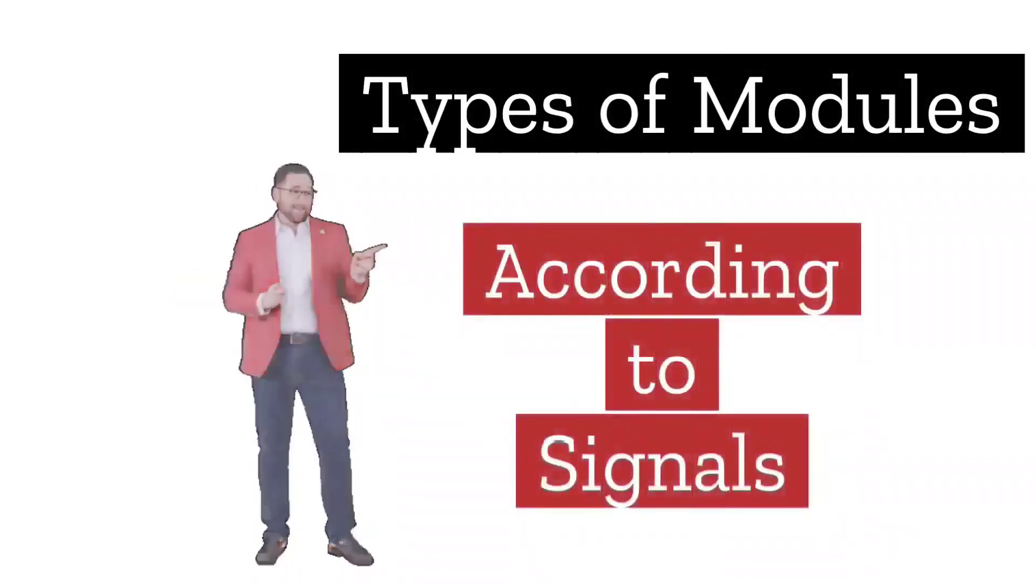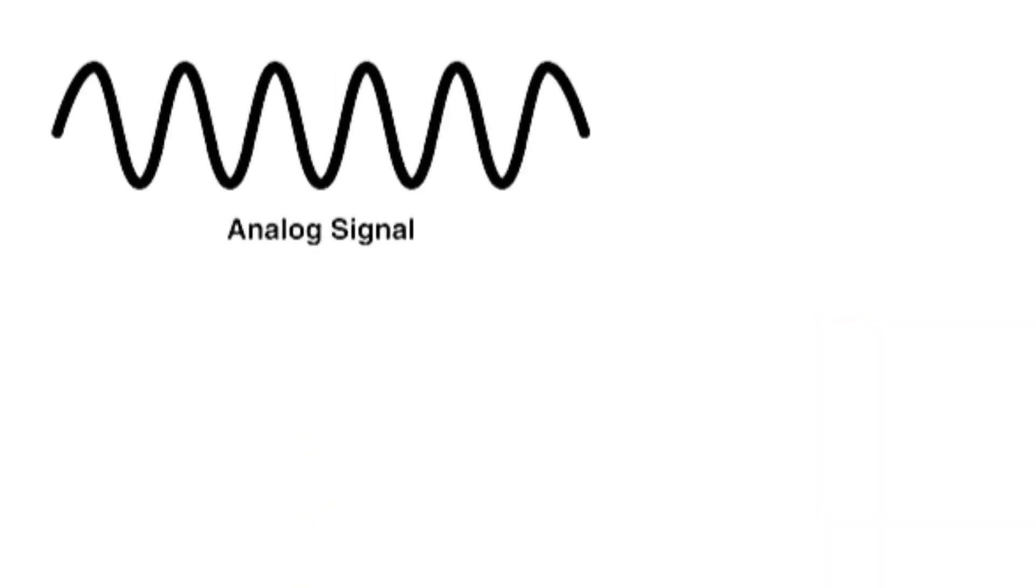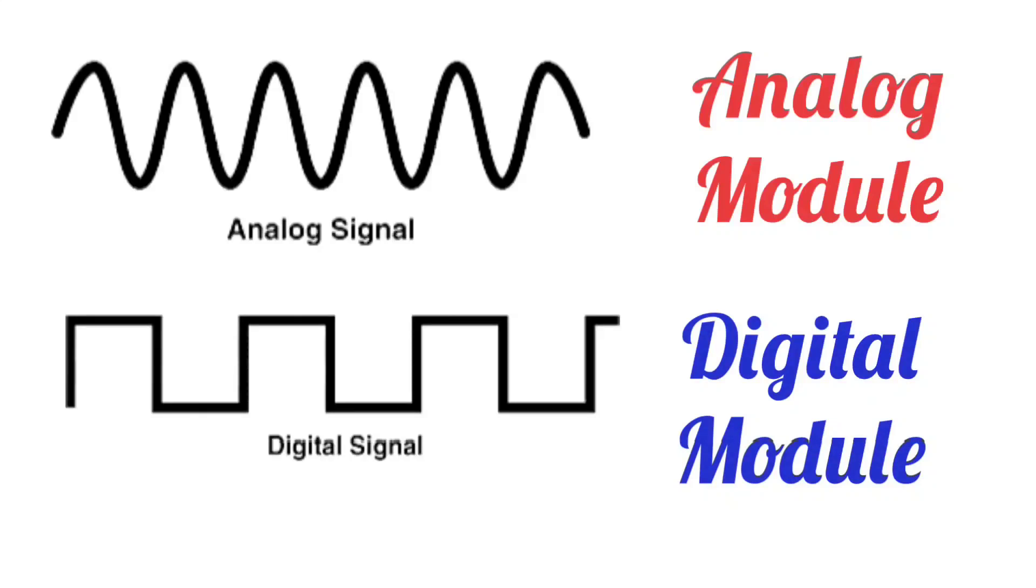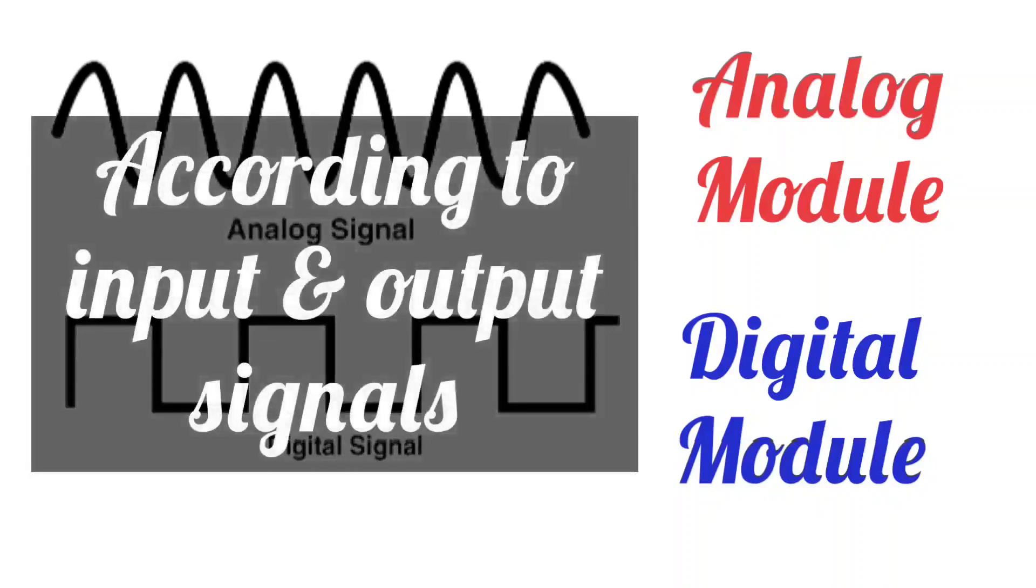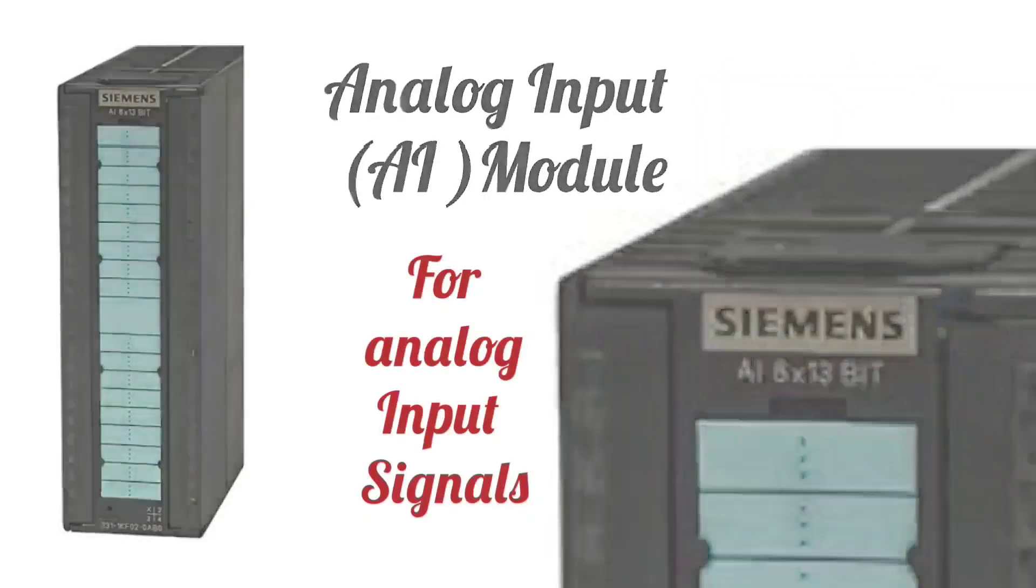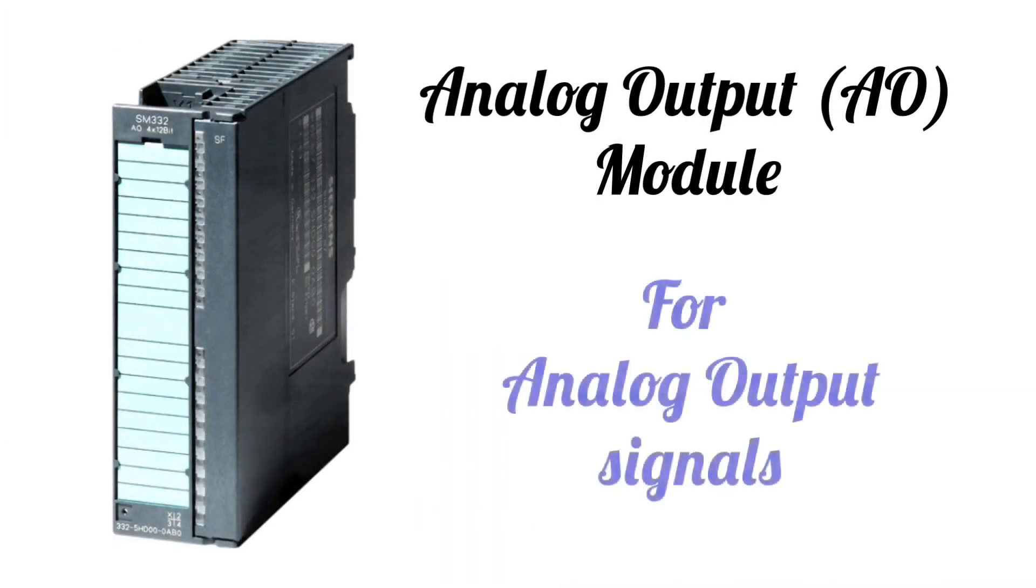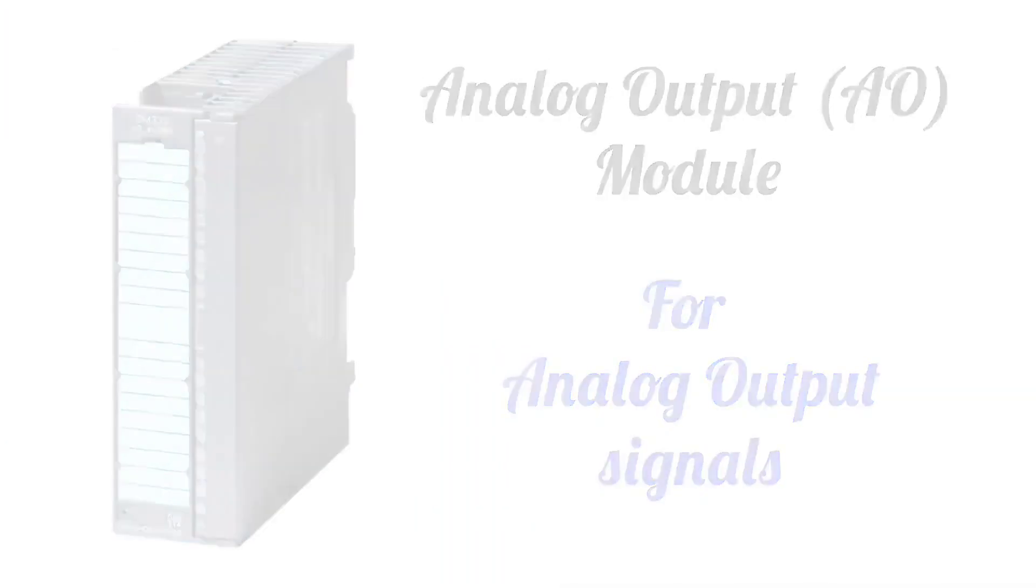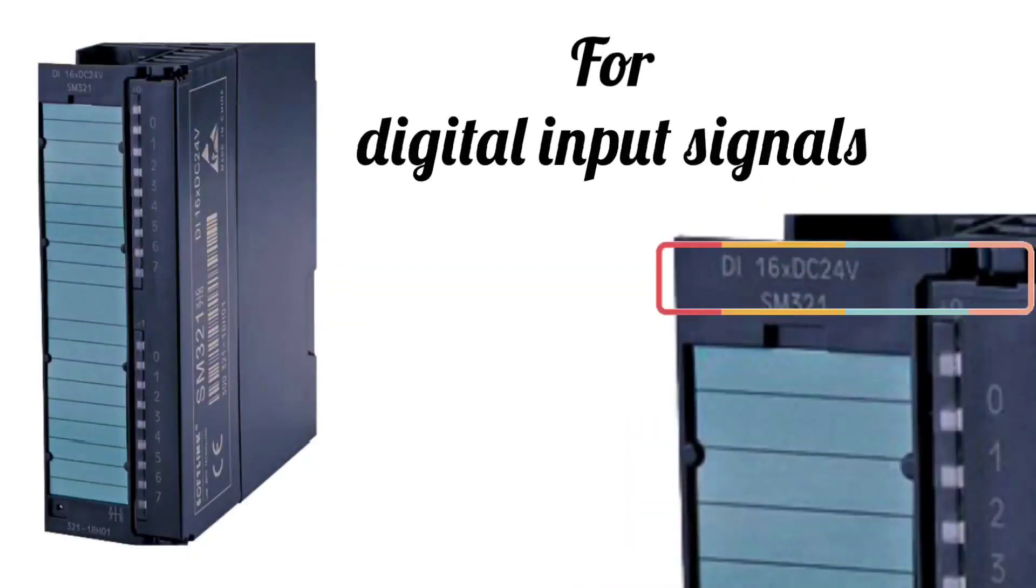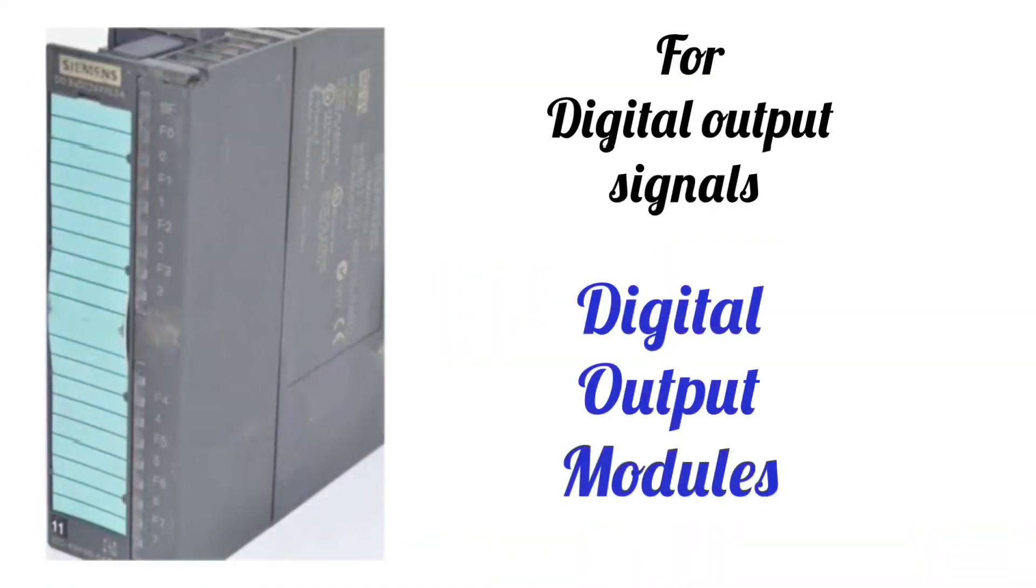Combined these are called I/O modules. Modules are also called cards. If we understand their types, modules are according to signals. For analog signals, analog modules. For digital signals, digital modules. These are further categorized according to the input and output signals: analog input module for analog input signals, and analog output module for analog output signals. Similarly, there will be two types of digital modules: digital input modules and digital output modules.